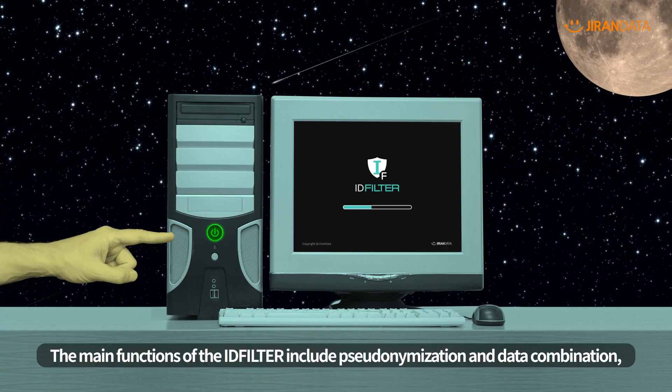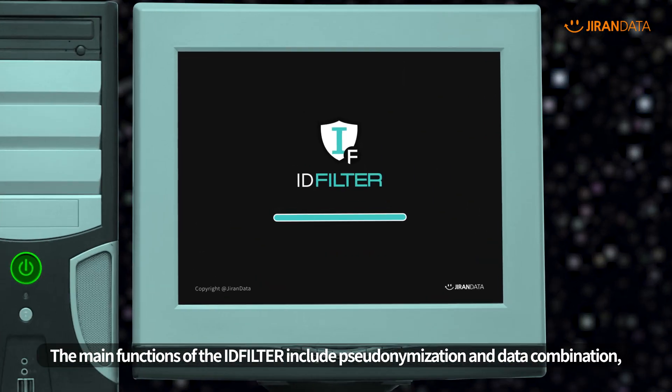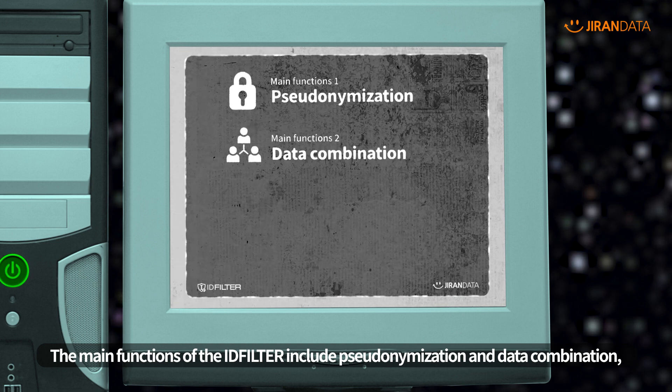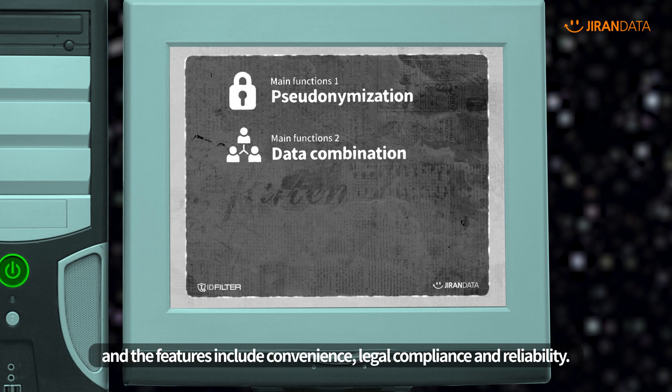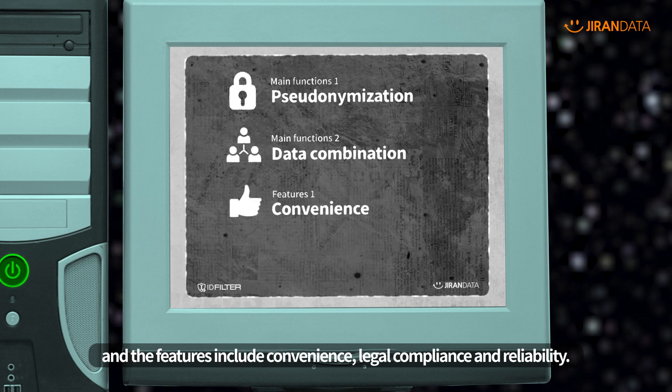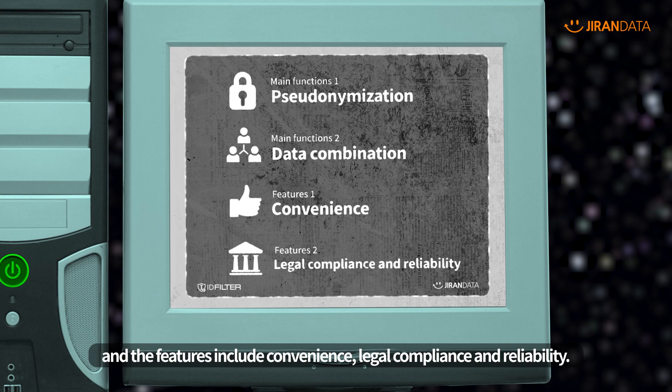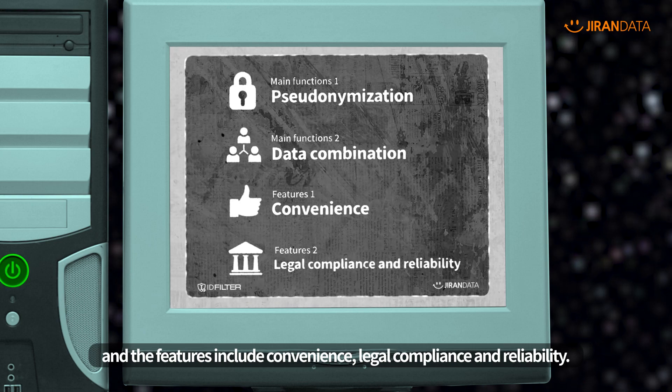What are the main functions and features of IDFilter? The main functions of IDFilter include pseudonymization and data combination, and the features include convenience, legal compliance, and reliability.